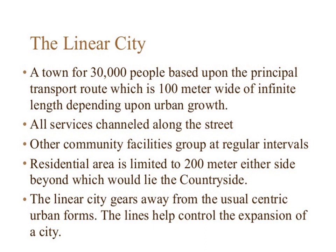The linear city is proposed for a town of 30,000 people based upon the principal transport route, which is 100 meters wide of infinite length depending upon urban growth. All services are channelized along the street. Other community facilities group at regular intervals. It considers the residential area limited to 200 meters either side, beyond which would lie the countryside. The linear city gears away from the usual centric urban forms; the lines help control the expansion of a city.